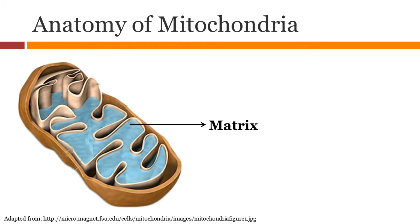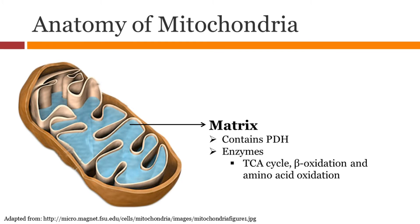The matrix is what is inside the mitochondria. It contains things like pyruvate dehydrogenase, enzymes for the TCA cycle, beta oxidation, and amino acid oxidation. It also contains the mitochondrial DNA, ribosomes, ATP, and ADP.